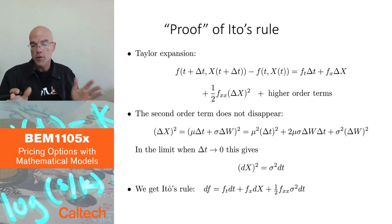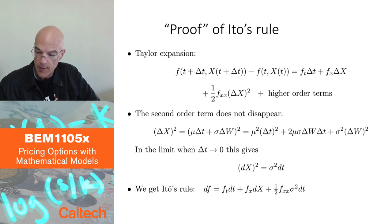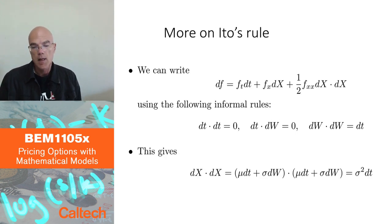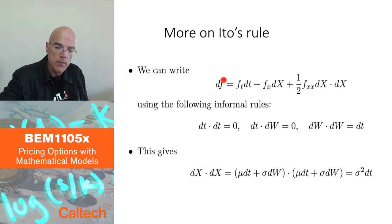A little bit more in terms of maybe how to remember it, if you need to know it by heart, which you may have to know if you are doing a job interview at a financial institution. This is helpful if you're familiar with Taylor's rule. So doing Taylor's rule formally here, df change in f is f_t dt plus f_x dx. That would be from first order expansion. And then the second order plus one half f_xx dx dx, or dx squared. So if you can remember this, you remember this.